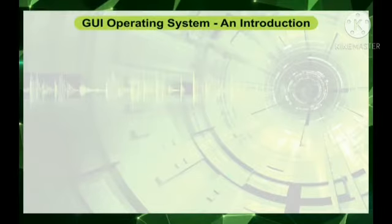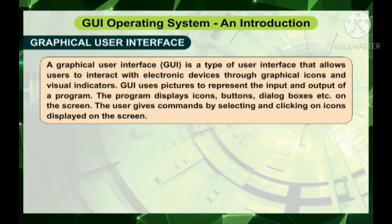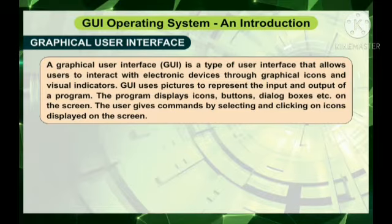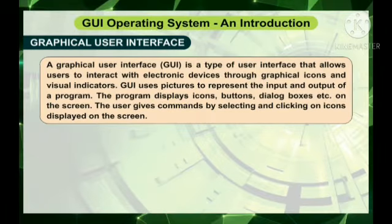A graphical user interface is a type of user interface that allows users to interact with electronic devices through graphical icons and visual indicators. GUI uses pictures to represent the input and output of a program. The program displays icons, buttons, dialog boxes etc. on the screen. The user gives commands by selecting and clicking on icons displayed on the screen.